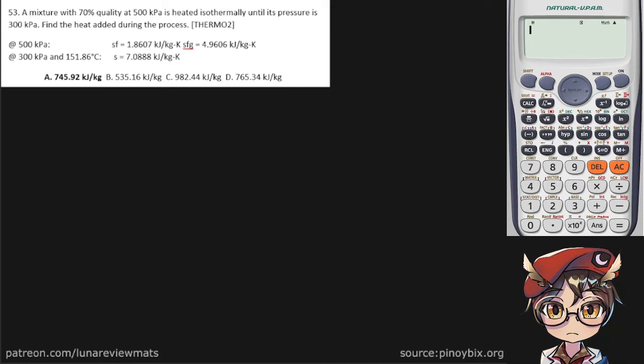A mixture with 70% quality at 500 kPa is heated isothermally until its pressure is 300 kPa. Find the heat added during the process and we're further given the steam properties and the corresponding pressures.